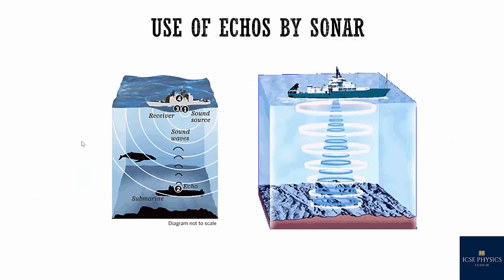Use of echoes by sonar. Sonar stands for sound navigation and ranging. In sonar, ultrasonic waves are sent in all directions from the ship. These waves are received after reflection from an obstacle. The distance of obstacle from the ship can be calculated by measuring the time interval T between the instant waves are sent and the instant when waves are received after reflection from the obstacle. The distance d from the obstacle from the source is then calculated by d is equal to speed into time by 2.